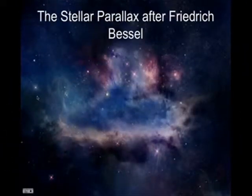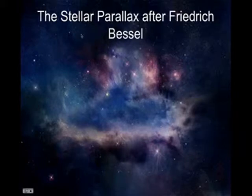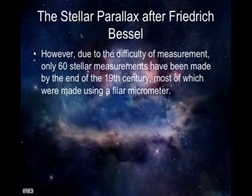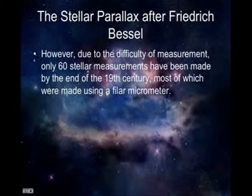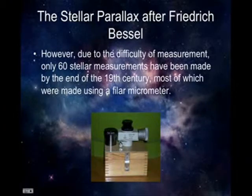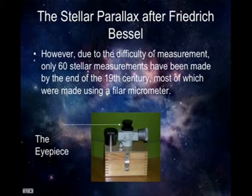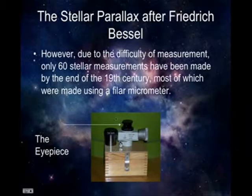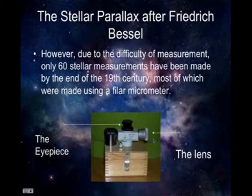We will now speak about how stellar parallax was modified after Frederick Bessel. Due to the difficulty of measurement, only 60 stellar parallaxes had been made by the end of the 19th century, most using an instrument called a filar micrometer. Here we have a picture of a filar micrometer. This arrow is pointing to the eyepiece, where you would look down, and this arrow points to the lens, which produces the image that you see.